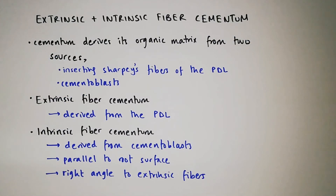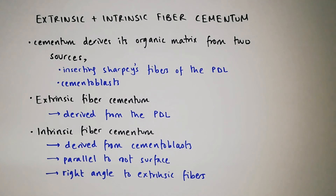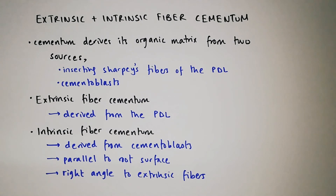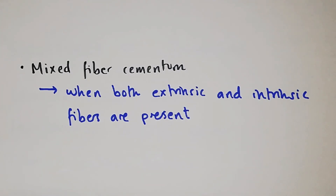The organic matrix of cementum is derived from two sources: either from the periodontal ligaments or from the cementoblasts. Extrinsic fiber cementum is derived from the periodontal ligament, while intrinsic fiber cementum is derived from cementoblasts. Intrinsic fiber cementum runs parallel to the root surface and occurs at right angles to the extrinsic fibers. The third type is mixed fiber cementum, which occurs when both extrinsic and intrinsic fibers are present.